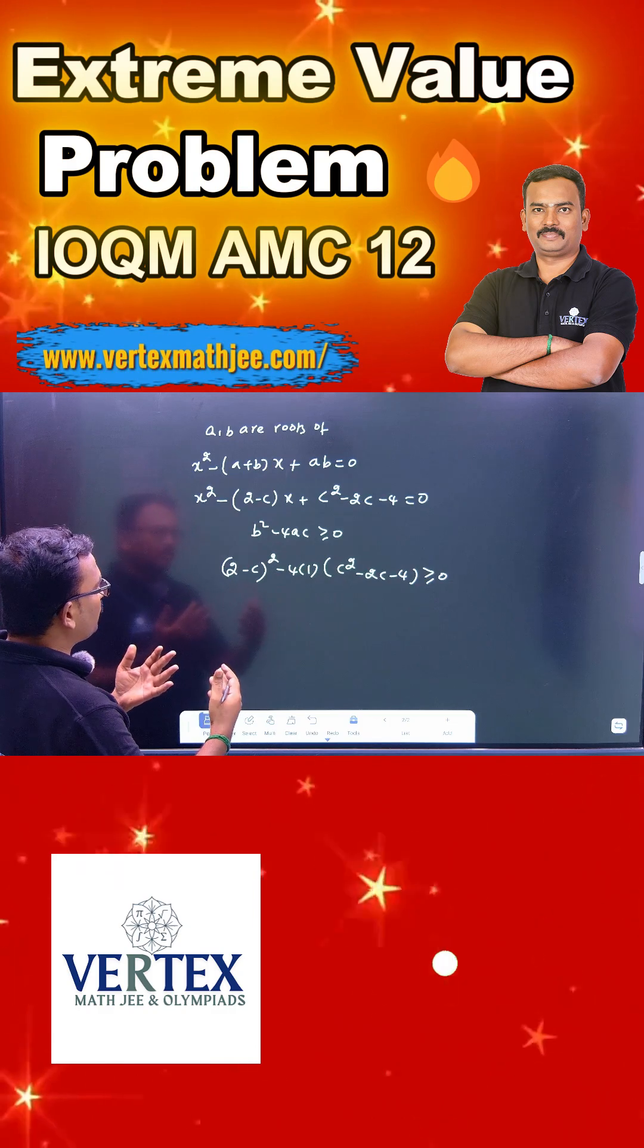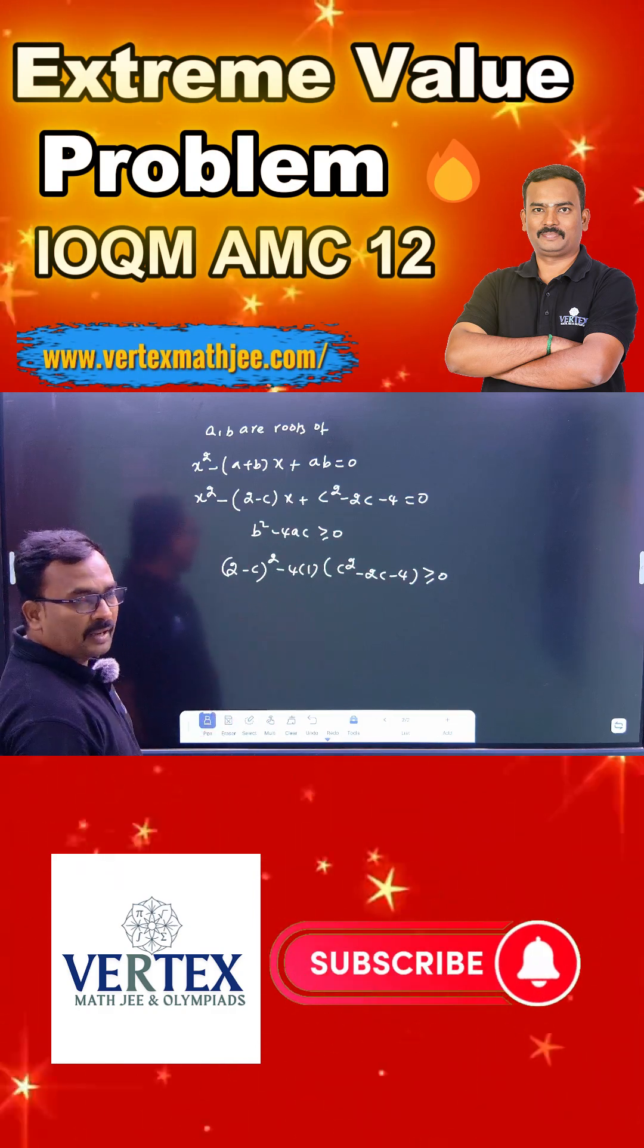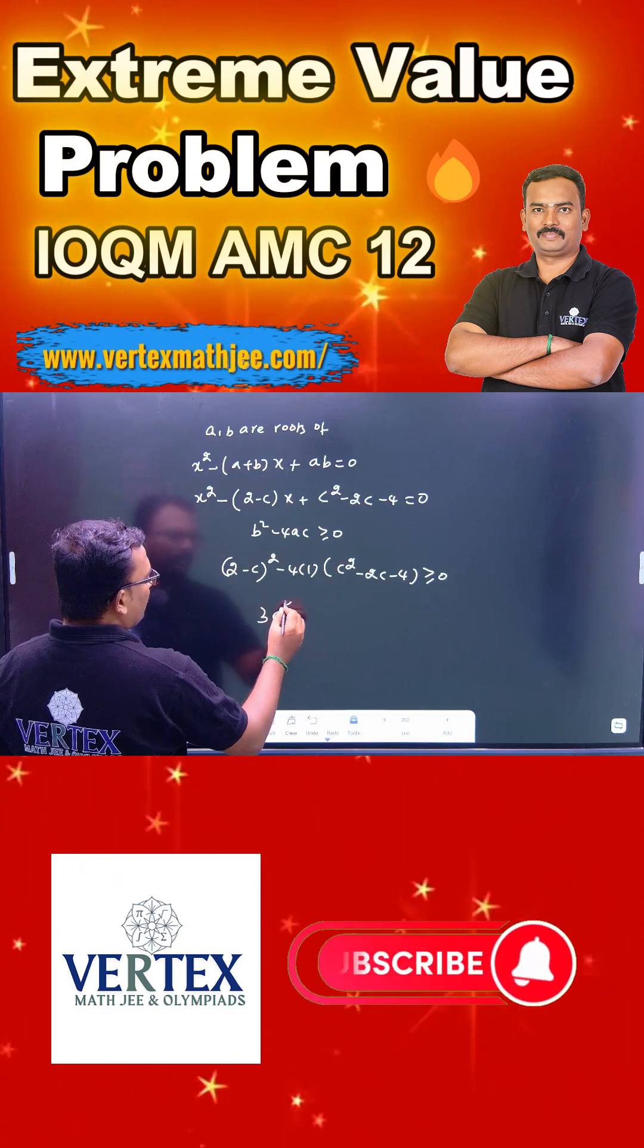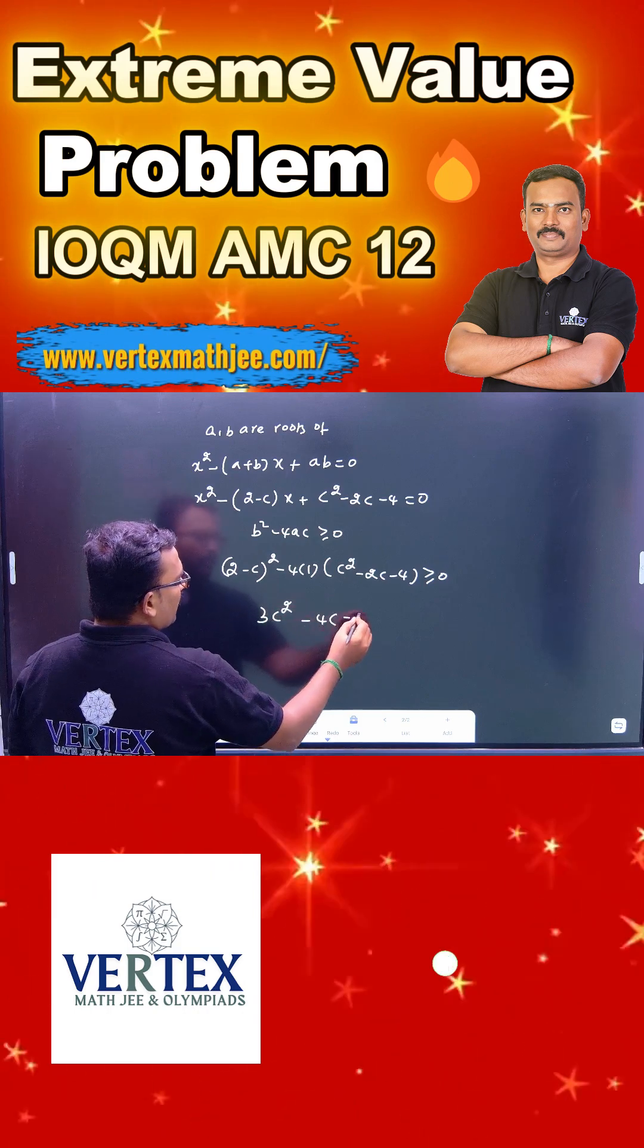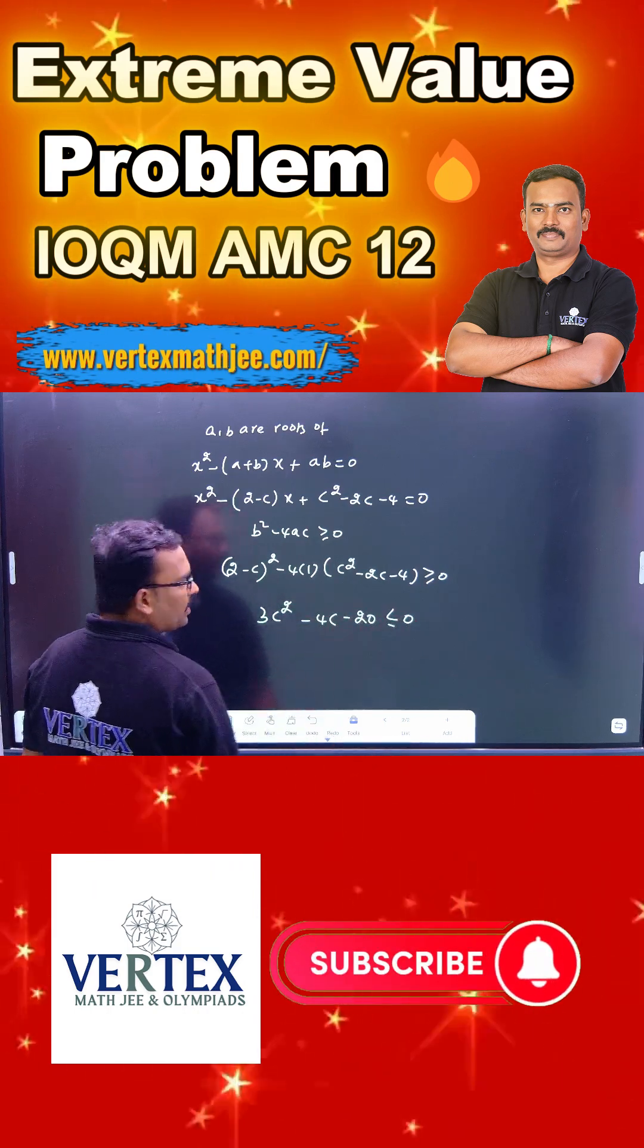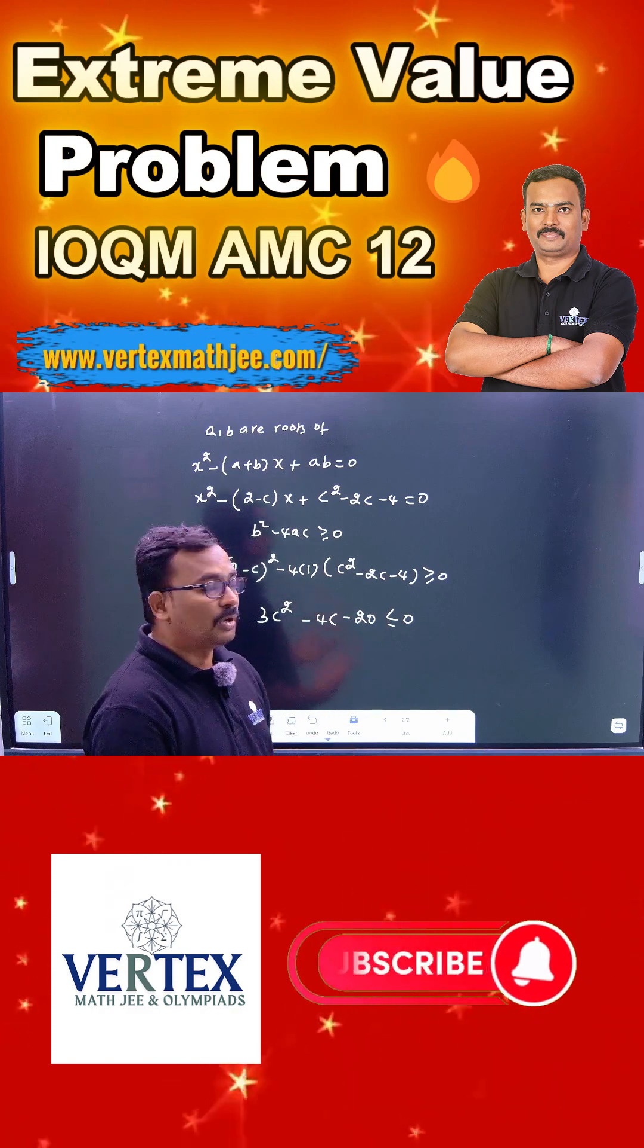You will get minus 3c squared something you will get. If you multiply by negative 1, so you will get finally 3c squared minus 4c minus 20 is less than or equal to 0. When you multiply by a negative number, the inequality will be changed.